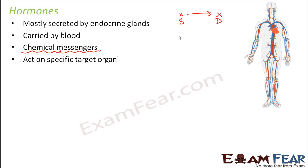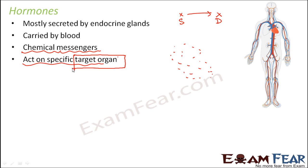Hormones act on specific target organs, so that specificity has to be understood. A hormone, let us suppose, is produced by a gland and spreads throughout the body in the blood. But it is not going to target all the organs of the body — it is only going to target some specific organs, and they are known as the target organs for that hormone. So the hormone will only target those cells which are its target cells, and every hormone will have some specific target organs.